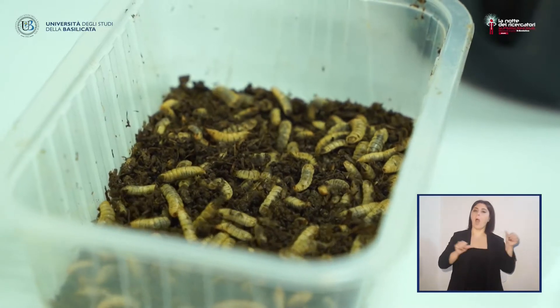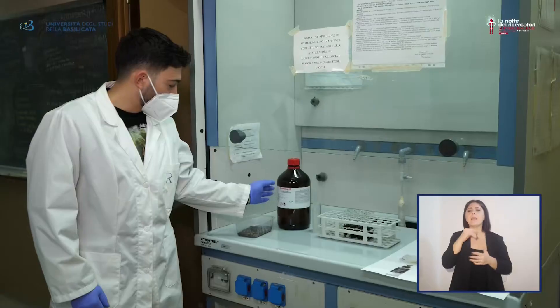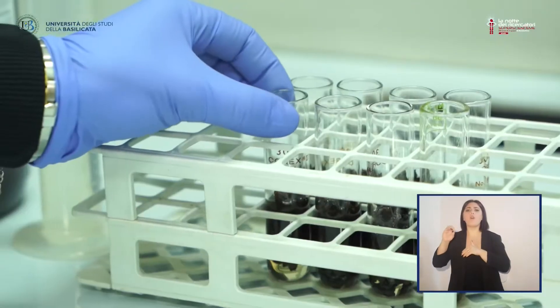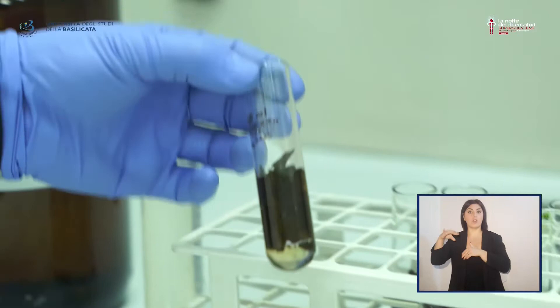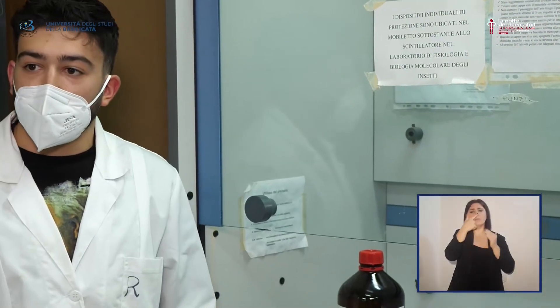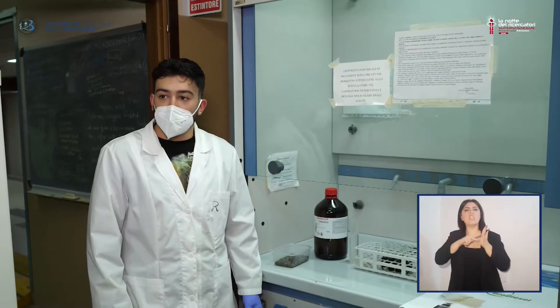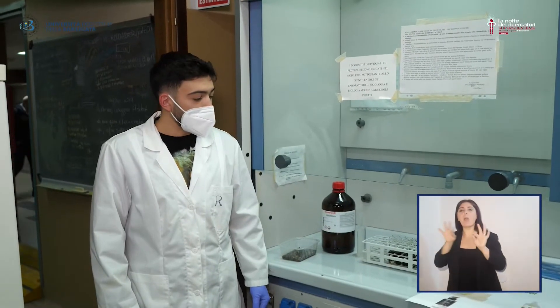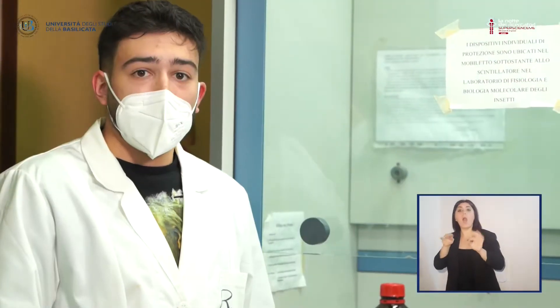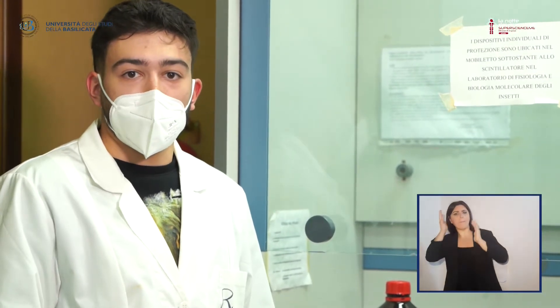Nel nostro laboratorio, dalle larve di Hermetia illucens estraiamo i lipidi attraverso l'utilizzo del cloroformio. I grassi di Hermetia illucens sono utilizzati per svariate applicazioni, tra cui la mangimistica dell'acquacoltura, il biodiesel e la produzione di cosmetici, sciampi e saponi.